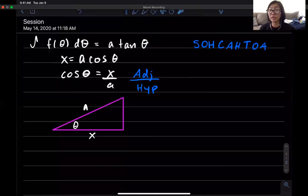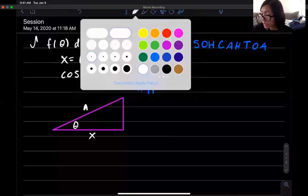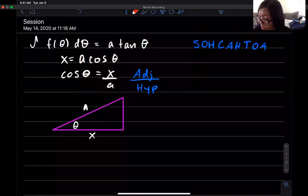Right so the Pythagorean theorem says we have a squared plus b squared equals c squared right where c squared is the hypotenuse.